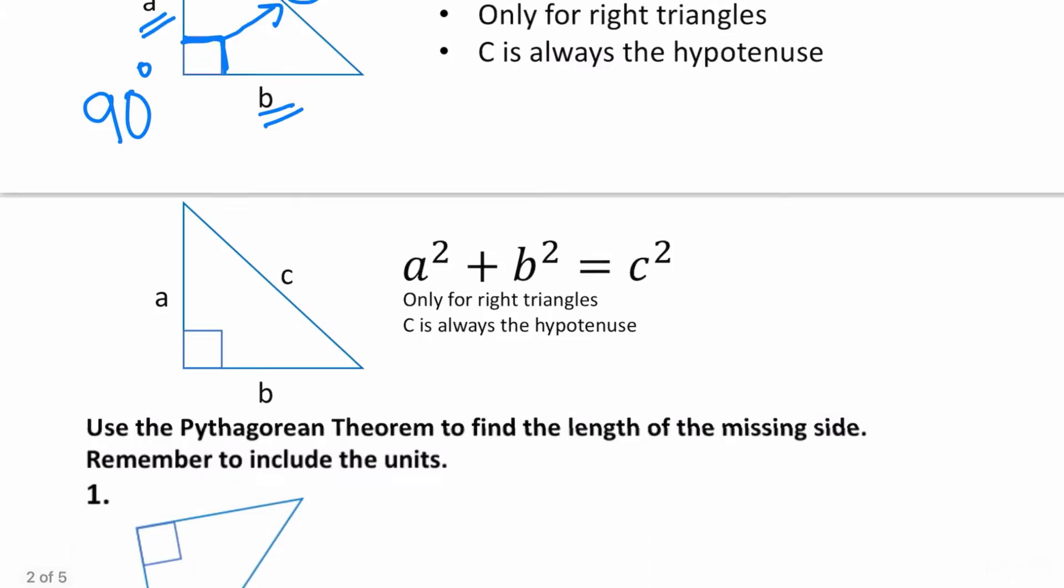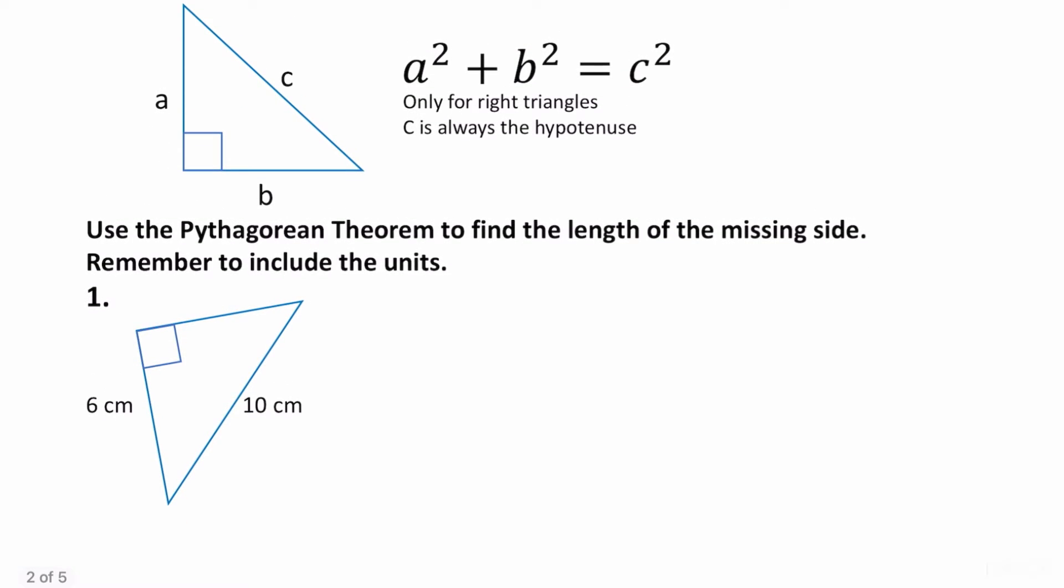Let's take a look at an example. Use the Pythagorean Theorem to find the length of the missing side. Remember to include the units. So right here we know that it is a right triangle. Opposite of the right triangle we have 10. This is the hypotenuse, so that is going to be your C in the formula. And then you can go ahead and make A equal to 6, and I can say that this is B.